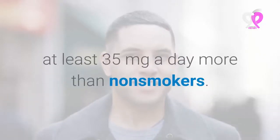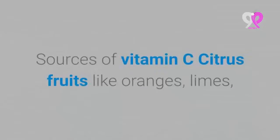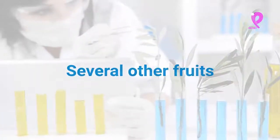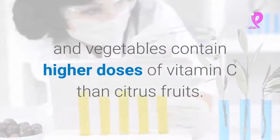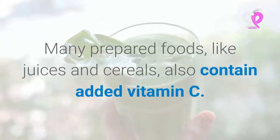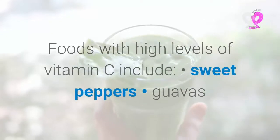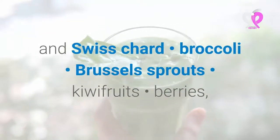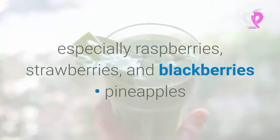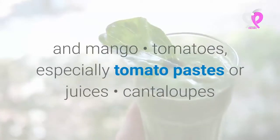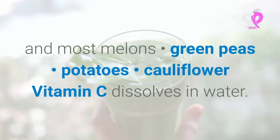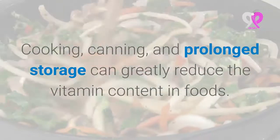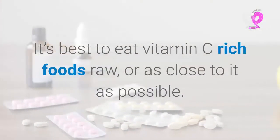Citrus fruits like oranges, limes, and lemons have traditionally been used to prevent and treat scurvy, but several other fruits and vegetables contain even higher doses of vitamin C. Foods with high levels of vitamin C include sweet peppers, guavas, papayas, dark leafy greens (especially kale, spinach, and Swiss chard), broccoli, Brussels sprouts, kiwi fruits, berries, pineapples, mango, tomatoes, cantaloupes, most melons, green peas, potatoes, and cauliflower. Vitamin C dissolves in water, so cooking, canning, and prolonged storage can greatly reduce vitamin content — it's best to eat vitamin C-rich foods raw or as close to raw as possible.